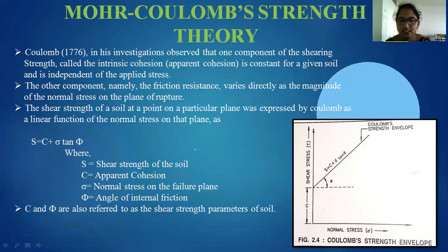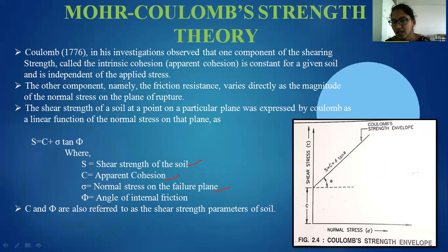Here, S is equal to shear strength of soil, C is equal to cohesion, sigma is equal to normal stress, and phi is equal to angle of internal friction. C and phi — cohesion and angle of internal friction — are referred to as shear strength parameters. We draw the graph between normal stress and shear strength, plotting approximately 2 to 3 trials. The meeting point gives S equal to C plus sigma tan φ, which is called the strength envelope.